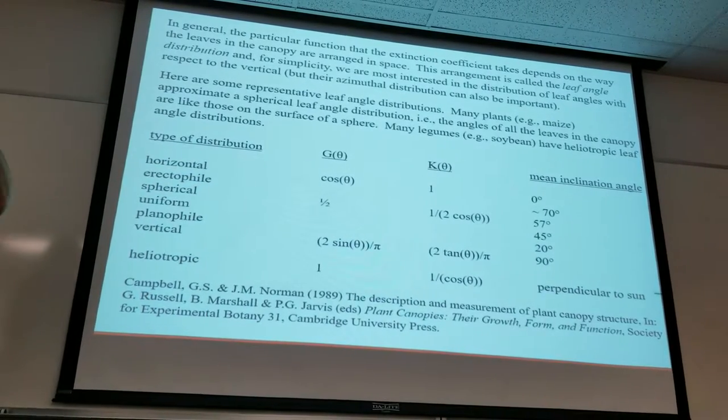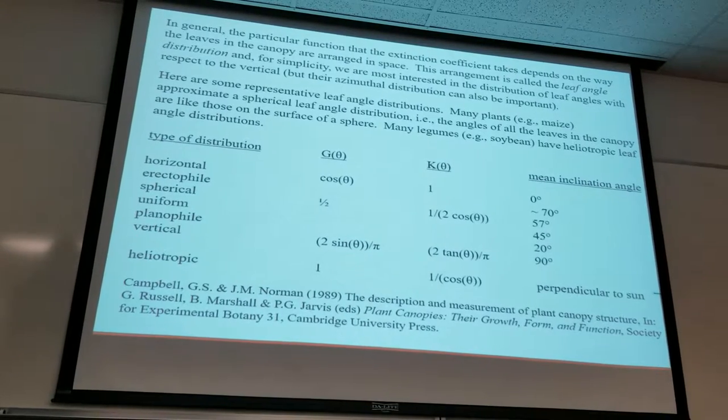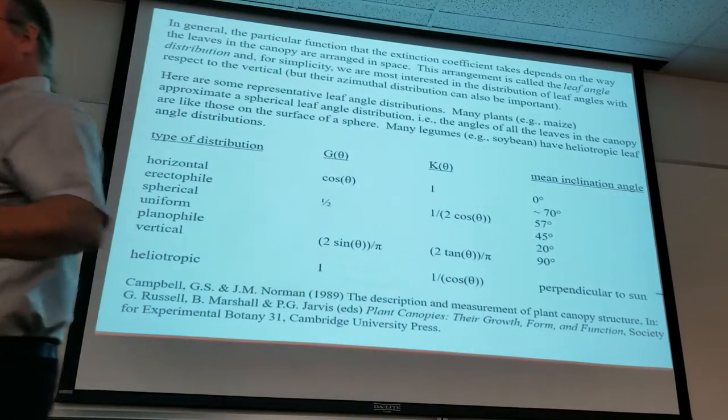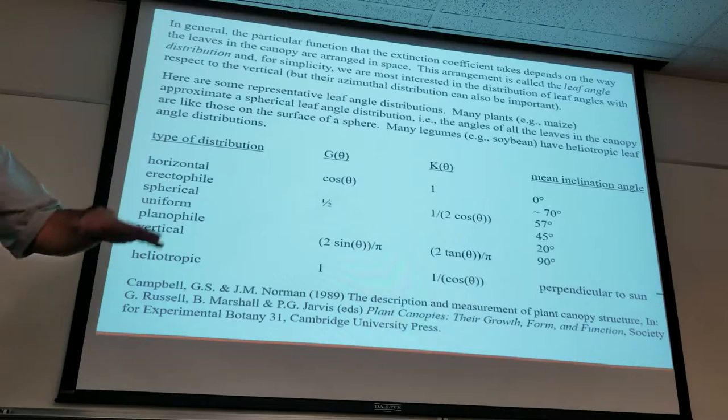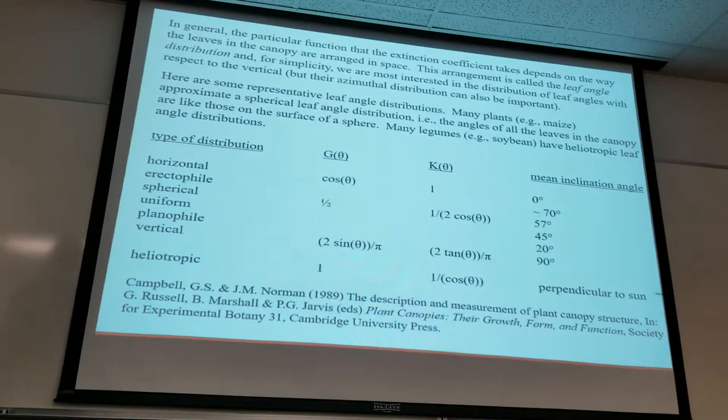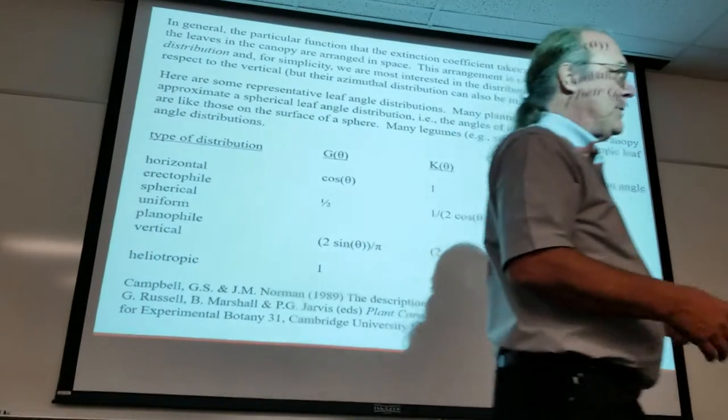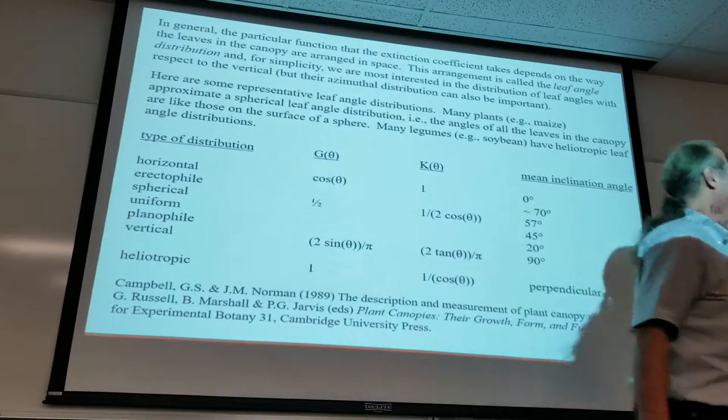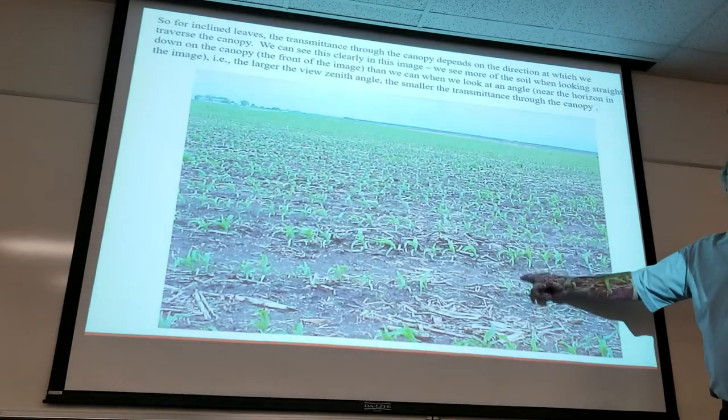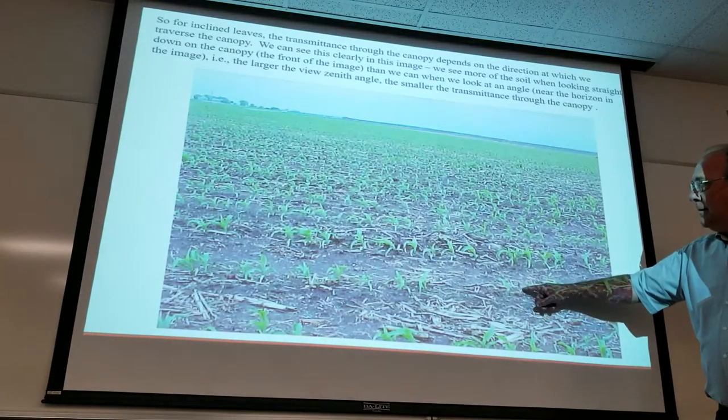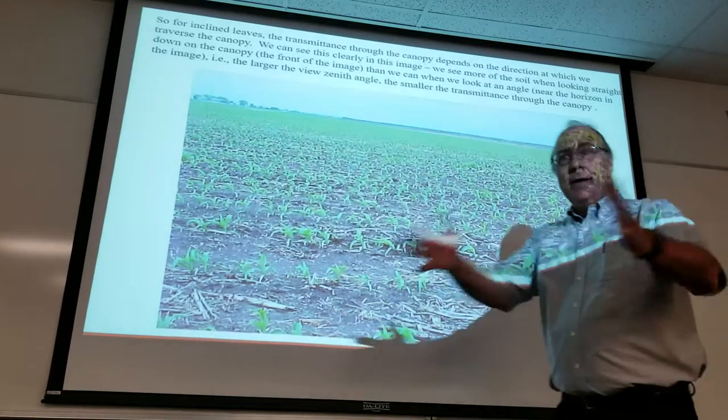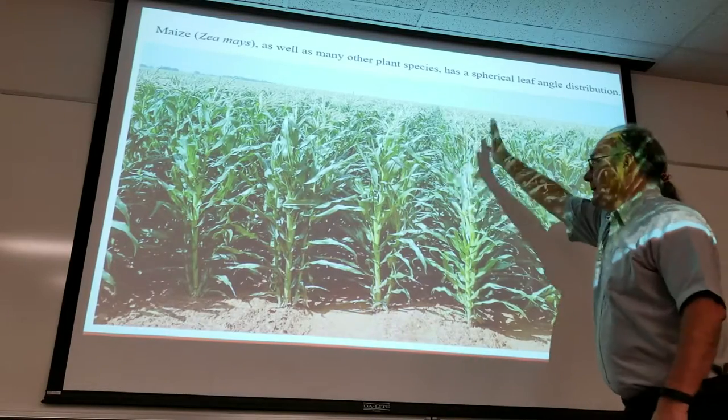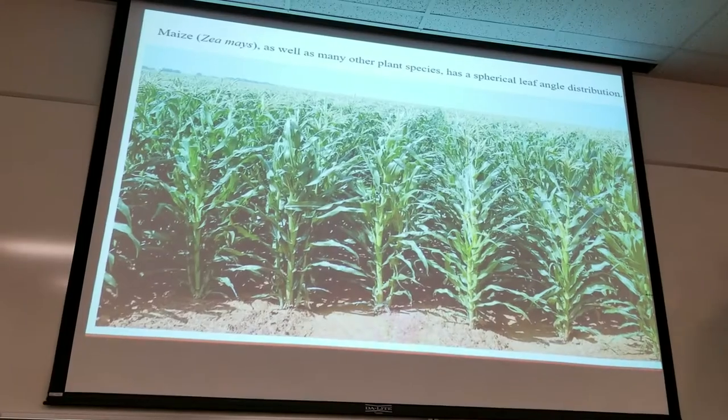We're not going to consider explicitly that azimuthal distribution of leaf area, just the vertical distribution of leaf area. That's not a bad assumption for canopies that are relatively homogeneous, that cover the ground. Once you get to the leaf area index somewhat above one and you don't have distinct row structure in your canopy. When you have distinct rows like that, corn canopies like that, it's a lot harder to estimate transmittance through a canopy like this than in a canopy with leaves all over the place. If you have row structure, it just adds complications, so we won't do that.